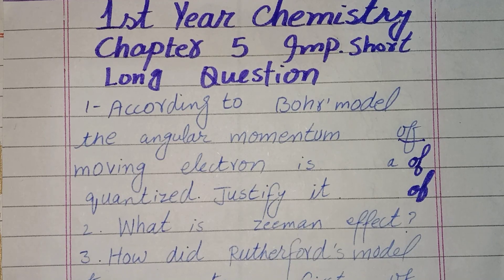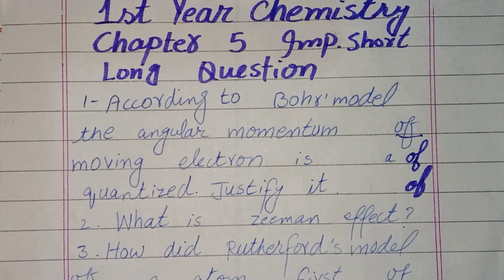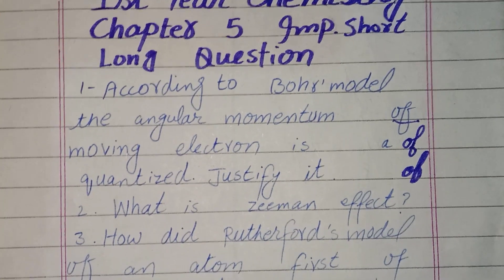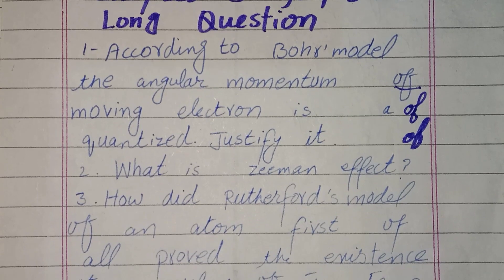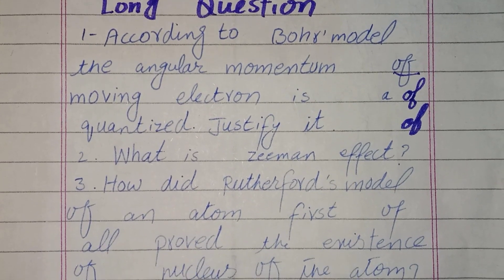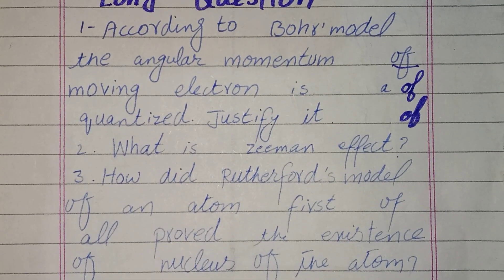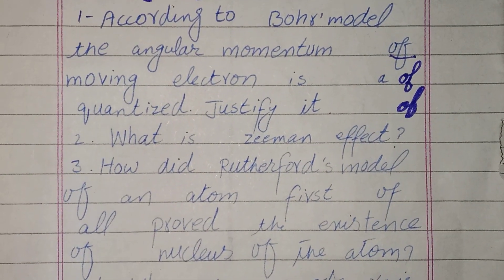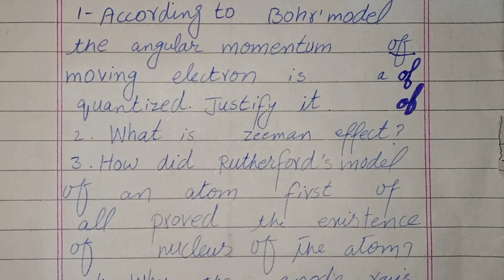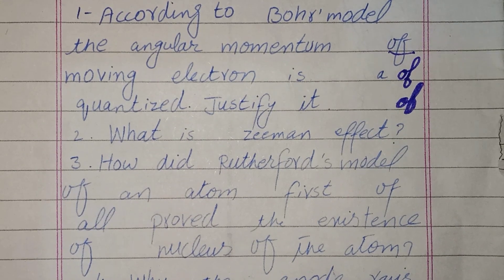Chapter number five important short and long questions. First of all, according to Bohr's model, the angular momentum of a moving electron is quantized — justify it.